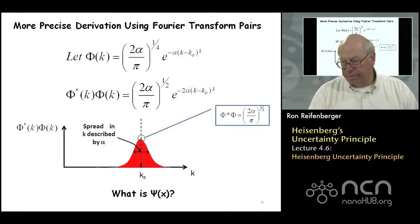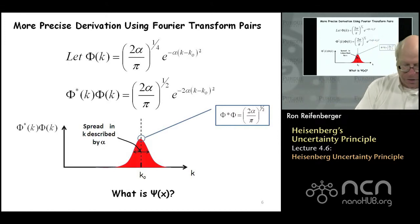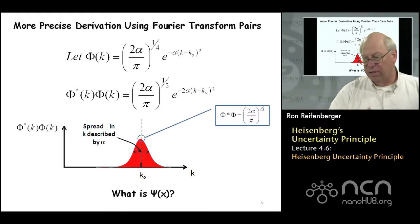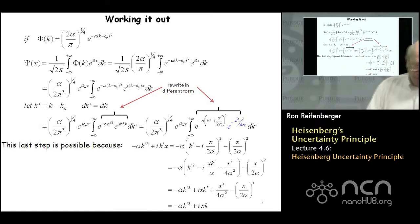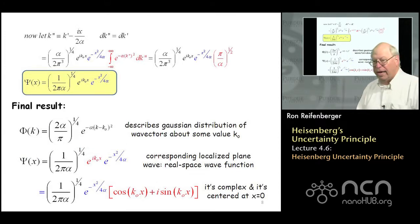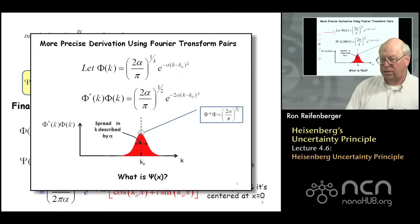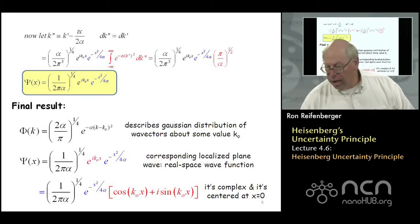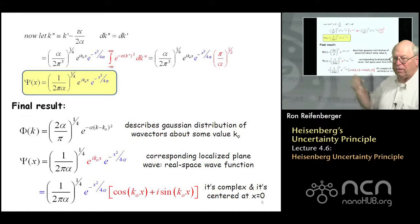The more precise derivation makes use of these Fourier transform pairs. I list the arithmetic systematically here, work out the integrals, and show the substitutions and steps required. At the end of the day, if phi of k is given by a function that looks like this, then psi of x that follows is given by a function that looks like that — and this is precisely the form of the wave function we wrote down at the start of the previous lecture.